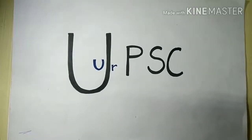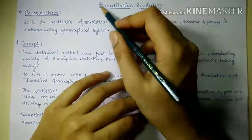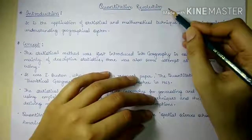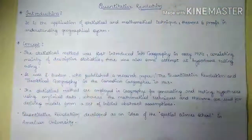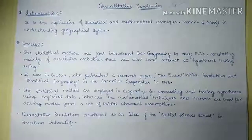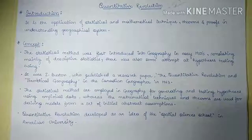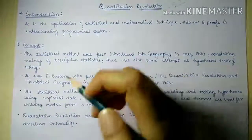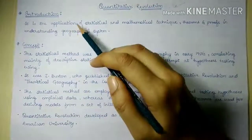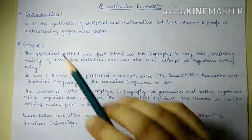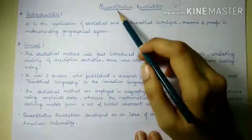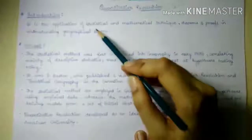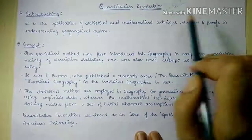Hello friends, welcome back to UPSC. Today we are going to start with a new topic in human geography — the concept of quantitative revolution. Quantitative revolution, as the name suggests, deals with quantitative techniques for understanding, studying, or analyzing the geographical system. We can basically define it as the application of statistical and mathematical techniques, theorems, and proofs in understanding the geographical system.